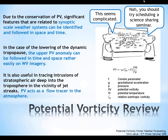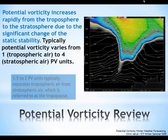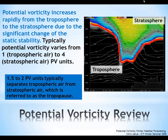This is material from a presentation Chris Jacobs did in Wichita, which I thought was a good example of the usefulness of PV. It shows PV units descending into the troposphere. Typically 1.5 to 2 PV units separate tropospheric air from stratospheric air — that's referred to as the tropopause. When you have undulations, it's the dynamic tropopause coming down and extending more into the troposphere.